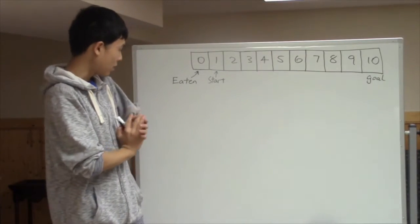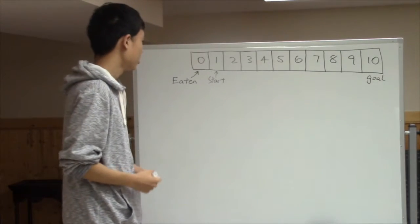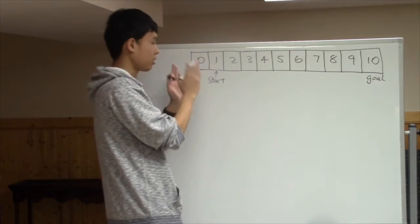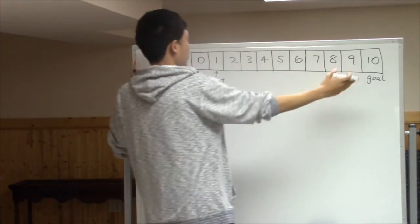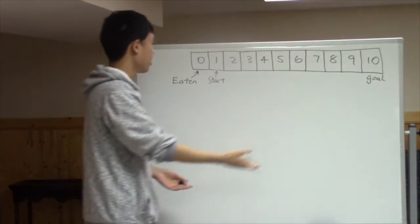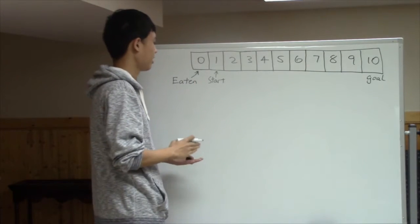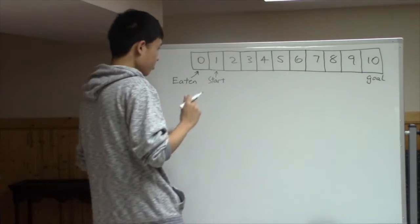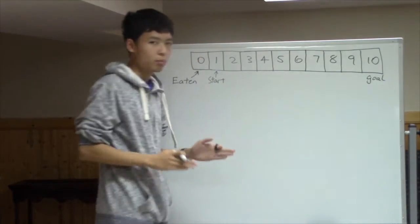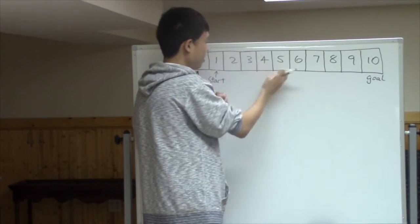Okay, so now I drew this event with the pads mentioned in the question. So this frog starts from number 1, and its goal is to escape these pads by landing on number 10. And then there's a bad ending as well, which is when the frog lands on number 0, it will get eaten by a snake.